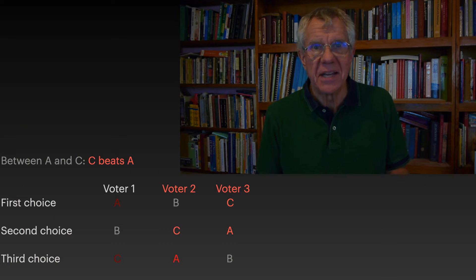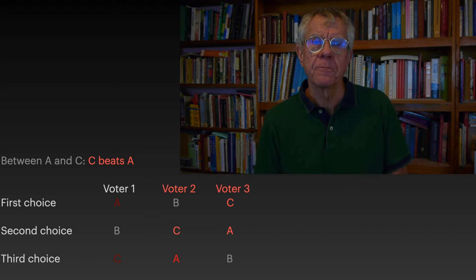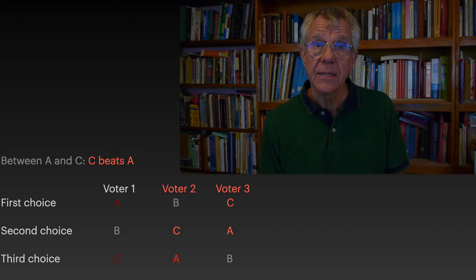Now suppose we took the other pair: A and C. So far we have that A beats B and B beats C. It would seem to follow by transitivity that A should beat C — if A is better than B and B is better than C, A must be better than C, right? Well, not so fast. Voter 1 is very clear: A is their first choice, C is their last choice, so voter 1 votes for A. Voter 2 prefers B to C, but C to A, and so given a choice between C and A, votes for C. Voter 3 has C as their first choice, so between A and C, votes C. The result is that A beats B, B beats C, and C beats A.